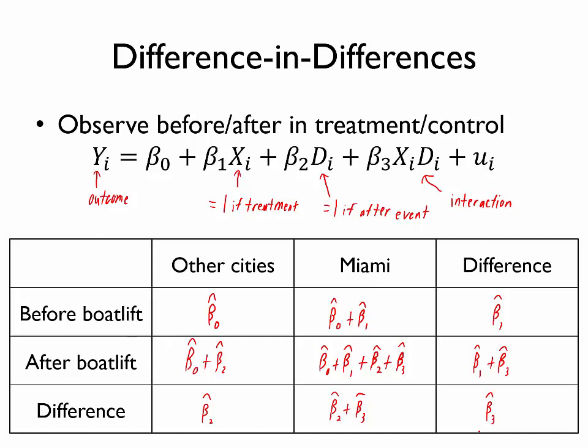And so indeed, that is what David Card did. And he found that difference-in-differences was approximately zero. So two different ways of saying that: first, he found that wages, the wage change after the boat lift in Miami was about the same as that wage change in other cities. Or if we believe this assumption that Miami would have been quite similar to these other cities if it weren't for the boat lift, then Card's results suggest that the influx of immigrants had virtually no impact on wages.